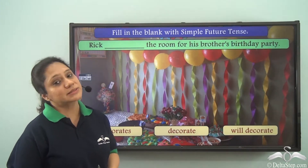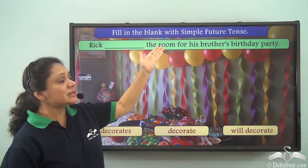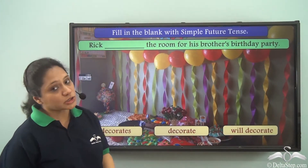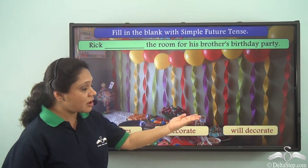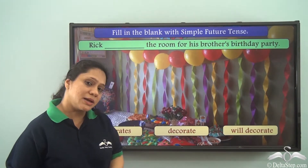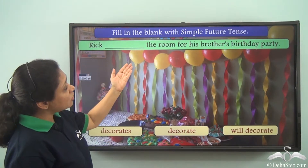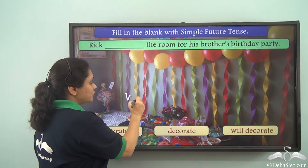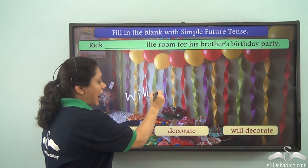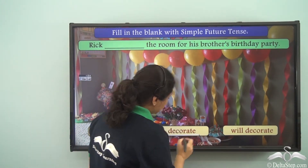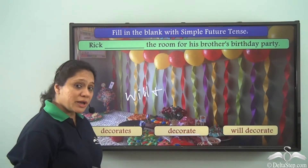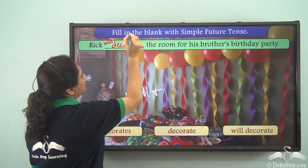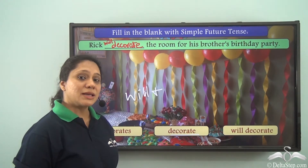Now you have learned some examples with the simple future tense. Can you fill in the blank with the simple future tense? To form a verb in the simple future tense, we use will or shall and the base verb. The base verb here is 'decorate,' so 'will decorate' is the correct answer. Rick will decorate the room for his brother's birthday party.